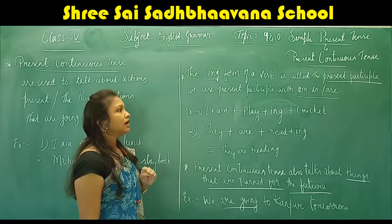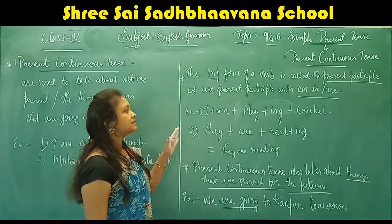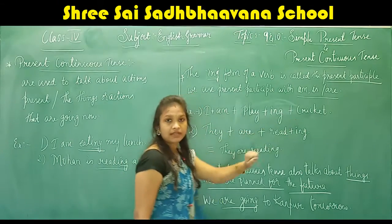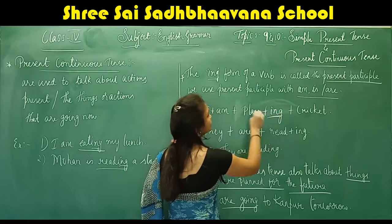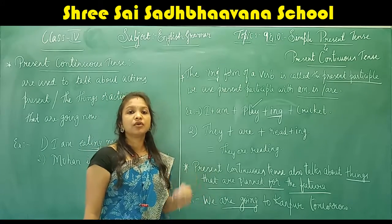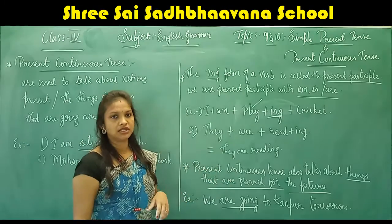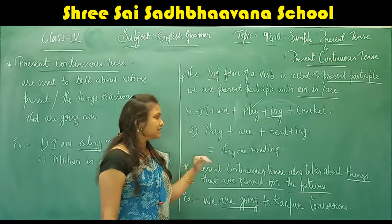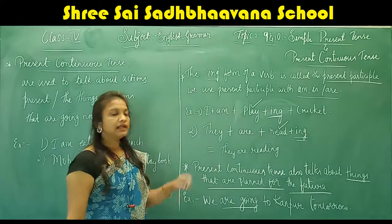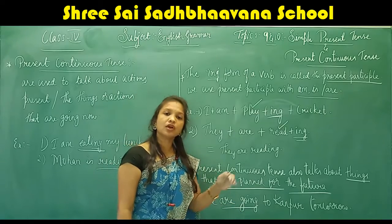The present participle is used with 'am', 'is', and 'are'. For example: 'I + am + play + ing = I am playing cricket.' We add 'ing' to the verb in present continuous tense. Next: 'They + are + read + ing = They are reading.' We add 'ing' to the verb 'read' — the action is going on presently.